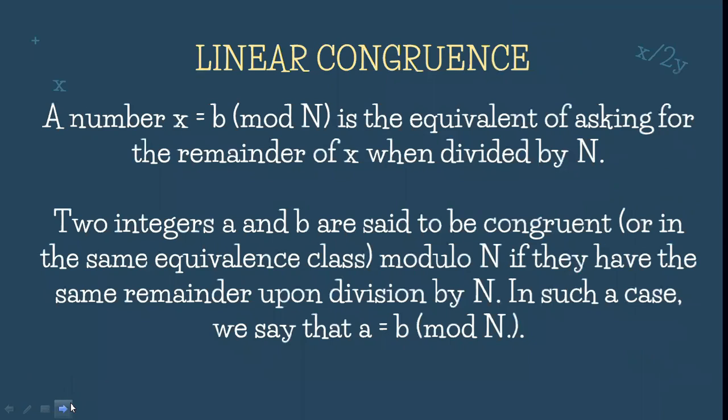Last time, we defined modulo as the equivalent for asking the remainder of x when divided by N. In linear congruence, two integers a and b are said to be congruent or in the same equivalence class modulo N if they have the same remainder upon division by N. In such a case, we say that a is congruent to b mod N.